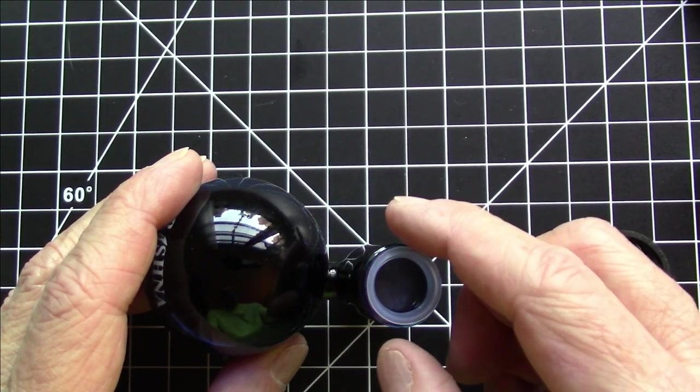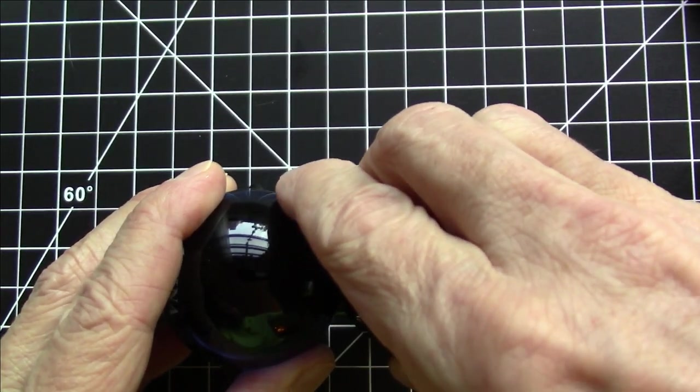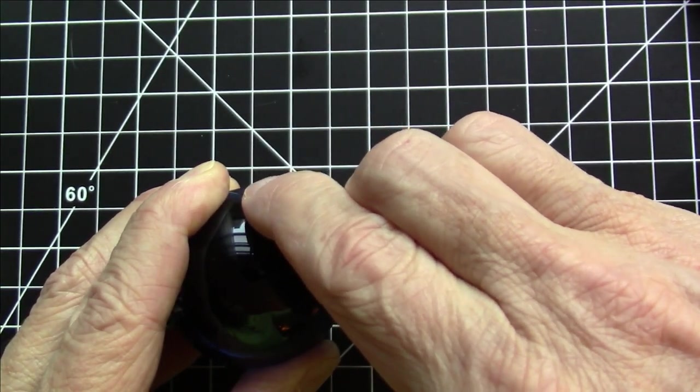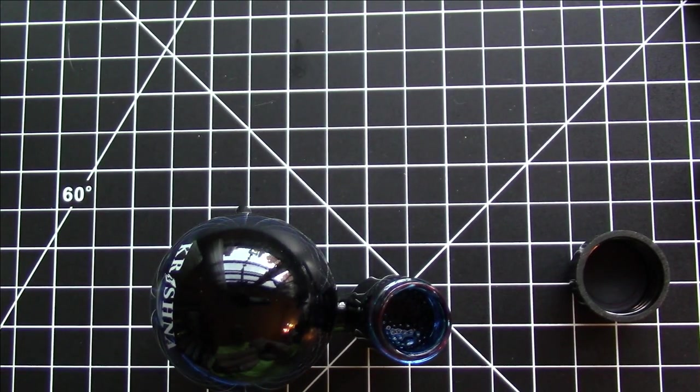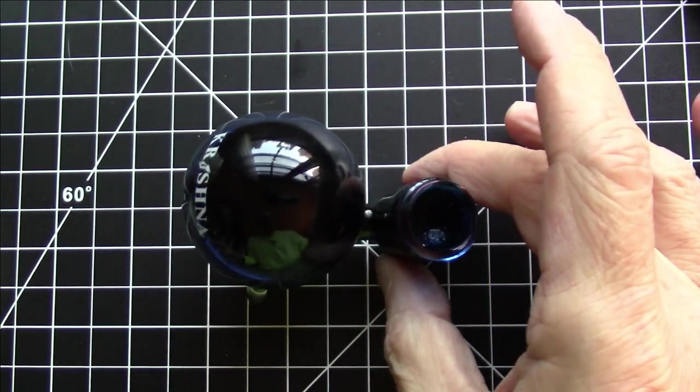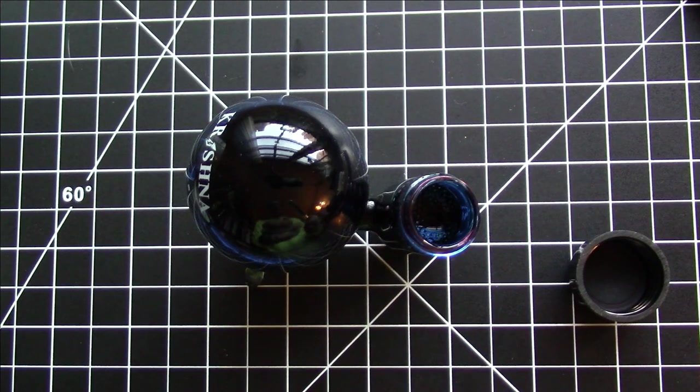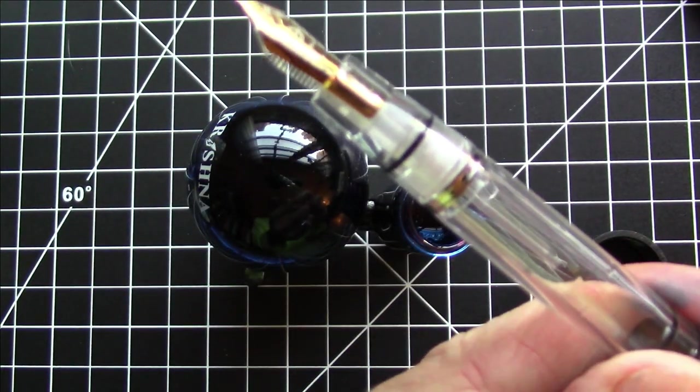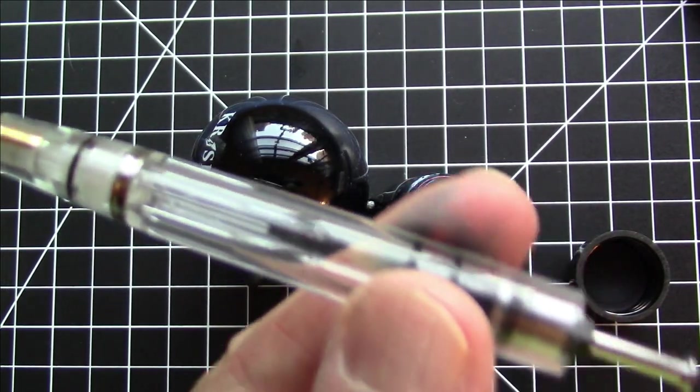It does have this inner seal here, which we will remove that comes out pretty easily. And we're going to ink up our pen. So this is the Wingsung 601A in the pump style vac, vacuumatic style filling pen.